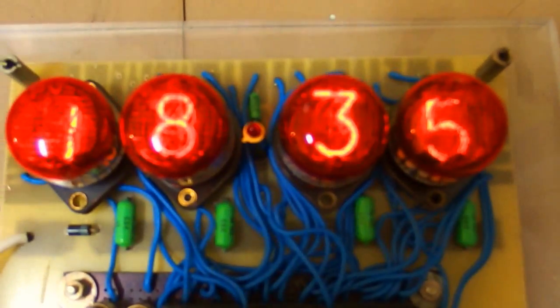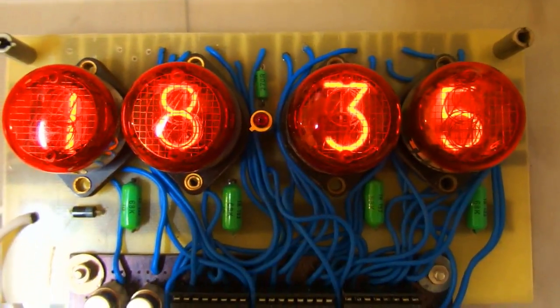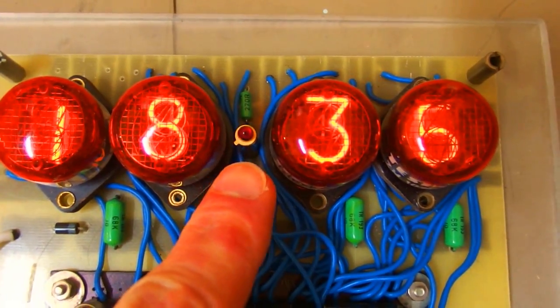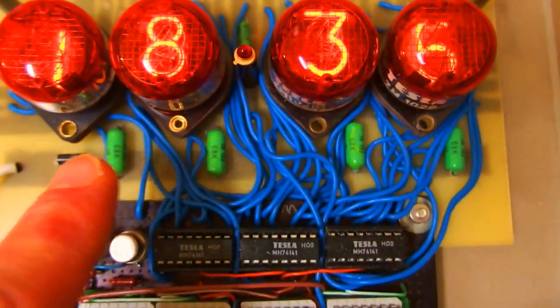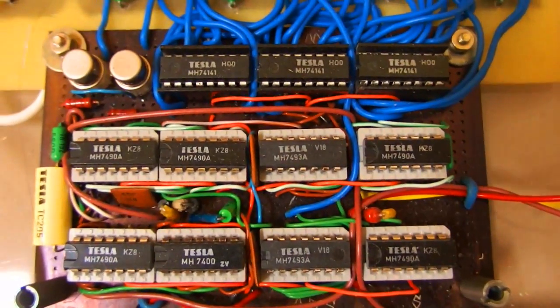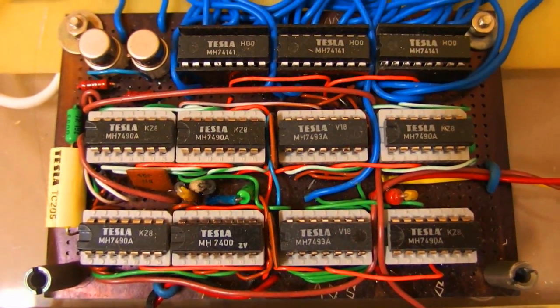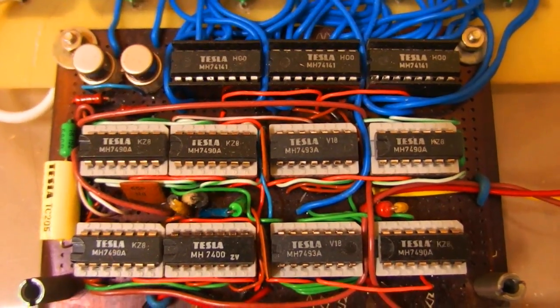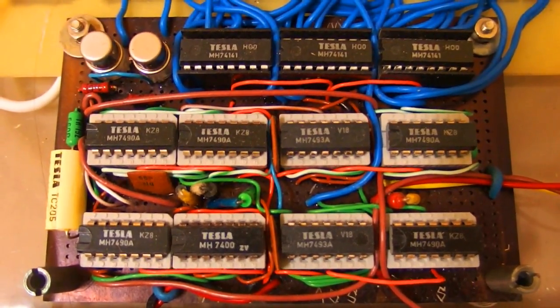Here you can see the Nixies, and a vintage LED. There are anode resistors. Here you can see TTL logic of the clock. All circuits are original from about the 70s.